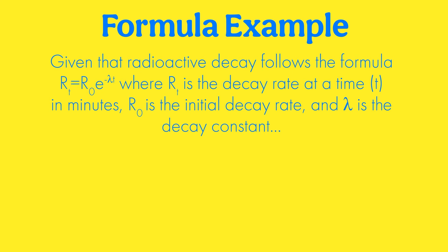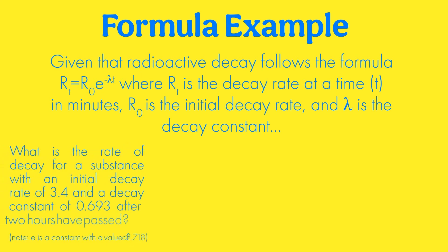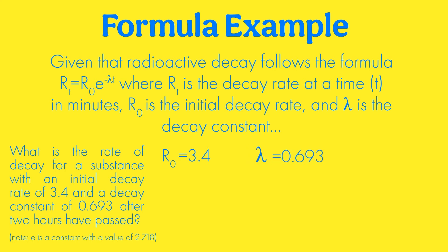Where R of T is the decay rate at a time T in minutes, R sub zero is the initial decay rate, and lambda is the decay constant. What is the rate of decay for a substance with an initial decay rate of 3.4 and a decay constant of 0.693 after two hours have passed? Okay. So for this one, we're just plugging in the numbers. So for R sub zero, we're going to put in 3.4. For the lambda, which is the decay constant, we're going to put in 0.693. And because it says two hours, but it tells us time is in minutes, we're going to put in 120 minutes. And so we're going to plug all of that into our calculator. And that's how we're going to get this answer right. So you can use the formula to help you.